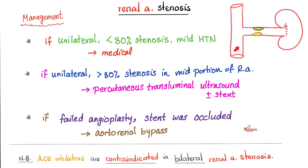If percutaneous intervention fails, open surgery is the next option. The abdominal aorta is connected directly to the renal artery beyond the obstruction, bypassing the narrowing so the kidney receives normal perfusion. This stops the kidney from releasing excess renin — the cause of hypertension in this case — which was verified by the renal vein renin assay.